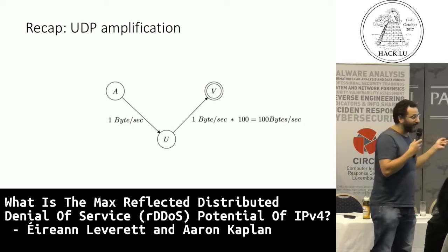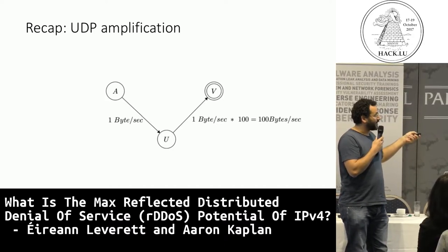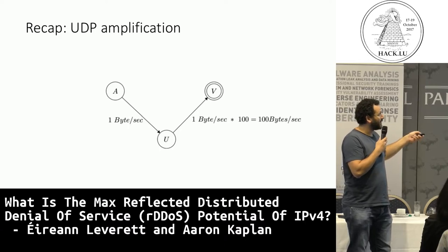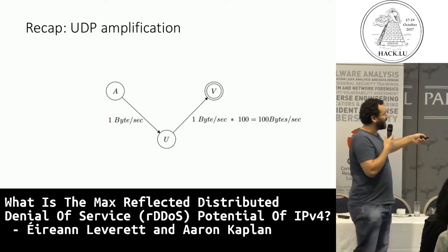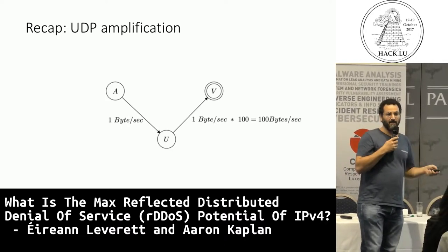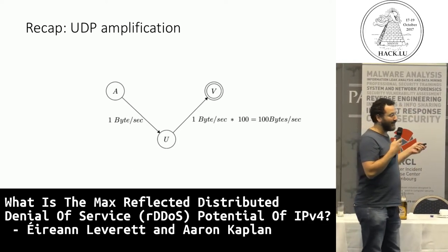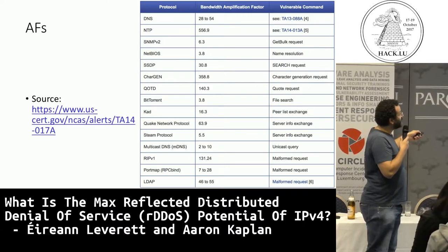Let's briefly recap how UDP amplification works. You have an attacker, a UDP amplifier, and a victim. The source IP of the victim is put into the question packet from the attacker to the UDP amplifier. The amplifier thinks it has to send back to the victim, and there is an amplification factor - in this case, 100. If I send one byte per second to the UDP amplifier, it will send one packet with 100 bytes back to the victim.